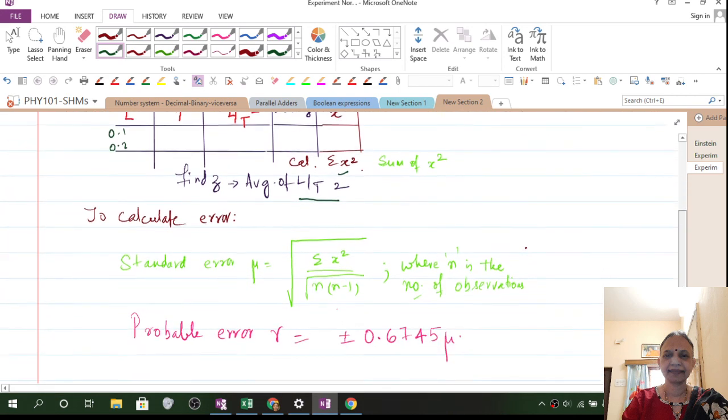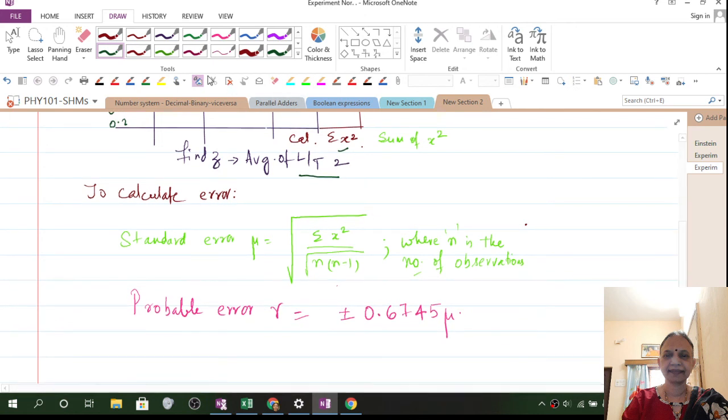When you do this, how do you calculate? What is the formula to calculate that? The standard error is calculated by summation. Whatever X square you get, that you will take it from this table. Divided by n into n minus 1. So you are taking observations 0.1, 0.2, etc. to 1. How many observations are there? 10. So your n will be 10.